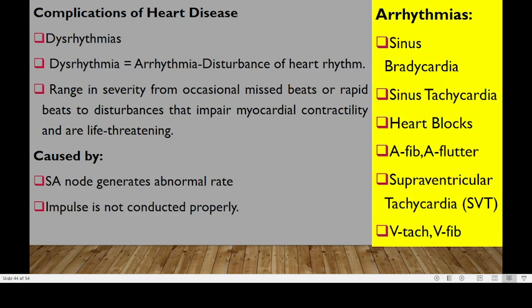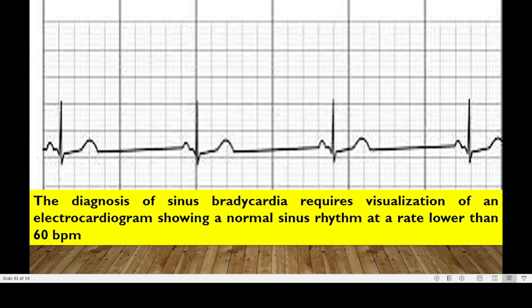We can look at complications of heart diseases, starting with dysrhythmias and then heart failure. Dysrhythmias are arrhythmias — disturbances in normal heart rhythms. They range in severity from occasional missed beats or rapid beats to disturbances that will impair myocardial contractility and are life-threatening. They are normally caused by the SA node generating an abnormal rate or sometimes an impulse not being properly conducted. We could have sinus bradycardia, which requires visualization of an ECG showing a sinus rhythm with a rate less than 60 — for example 4 times 10 equals 40, which is less than the normal range of 60 to 100.